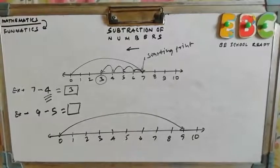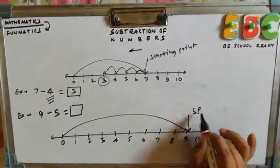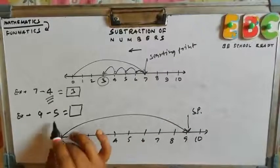That is 1, 2, 3, 4, 5, 6, 7, 8 and reach to 9 at our starting point. Right. Now what we have to do?